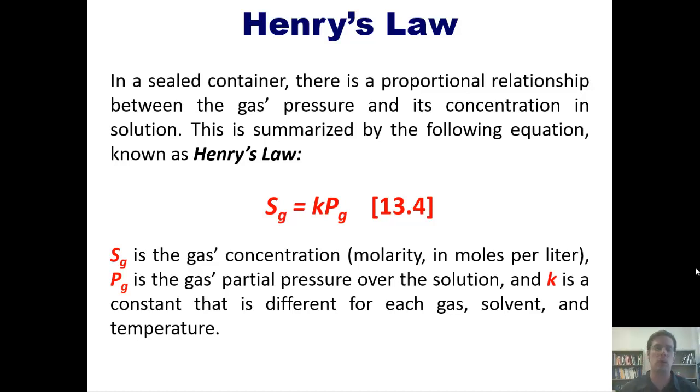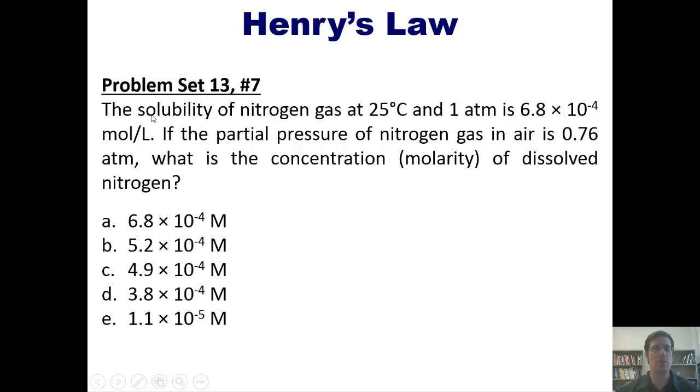That brings us to some Henry's Law problems. First, the solubility of nitrogen gas at 25 degrees Celsius in one atmosphere is 6.8 times 10 to negative 4 moles per liter. If the partial pressure of nitrogen gas in the air is 0.76 atmospheres, what is the concentration (molarity) of dissolved nitrogen? I invite you to pause the video here and attempt this on your own. I'm going to place a link here to a separate video in which I answer the question if you'd like to watch it.